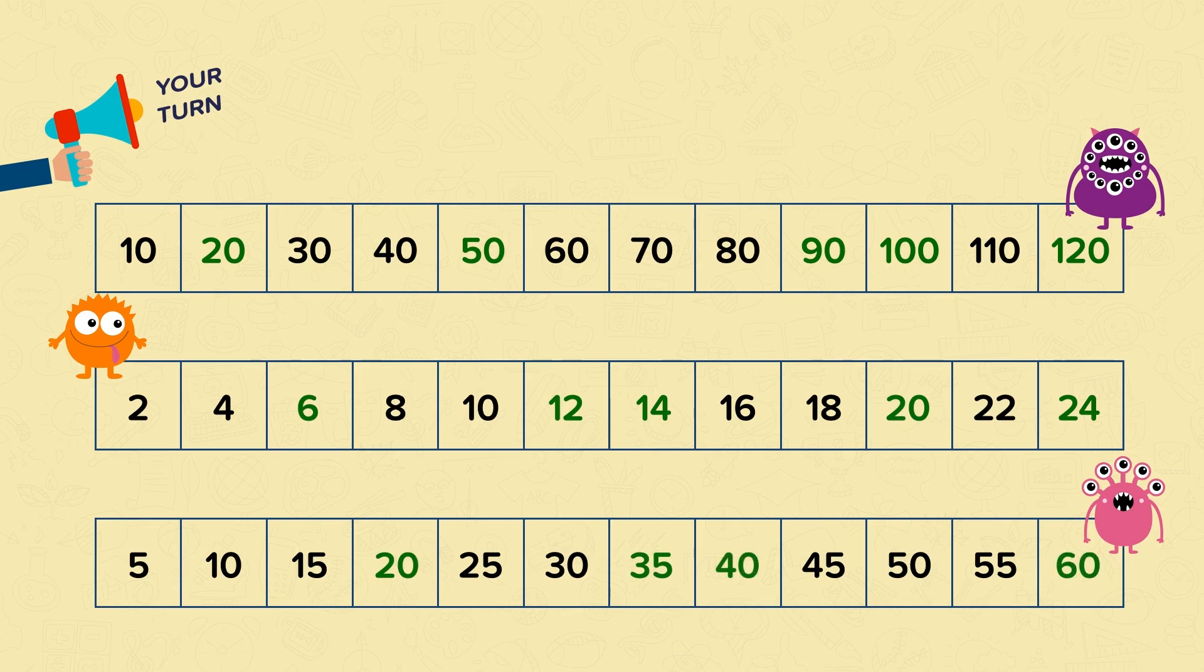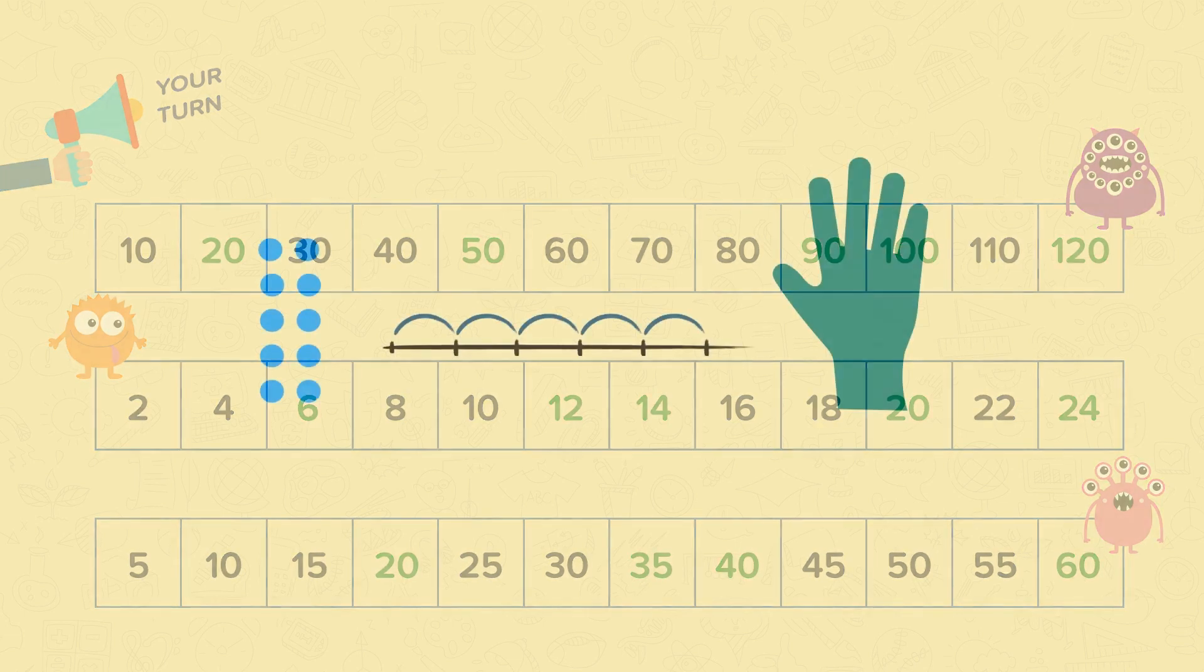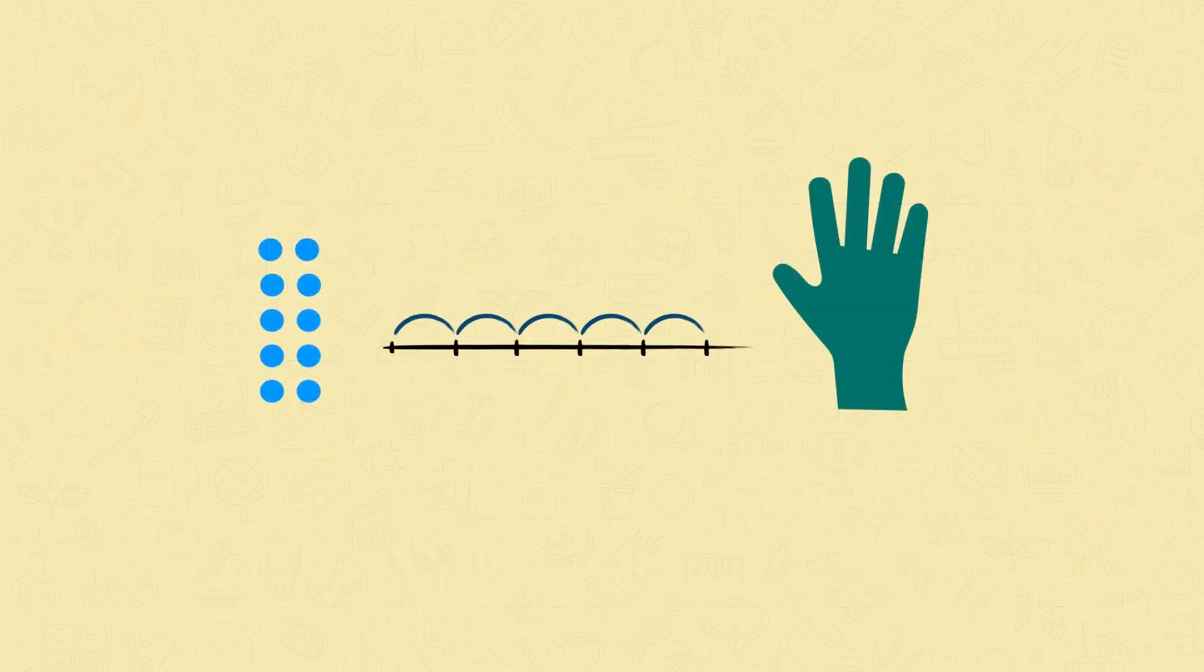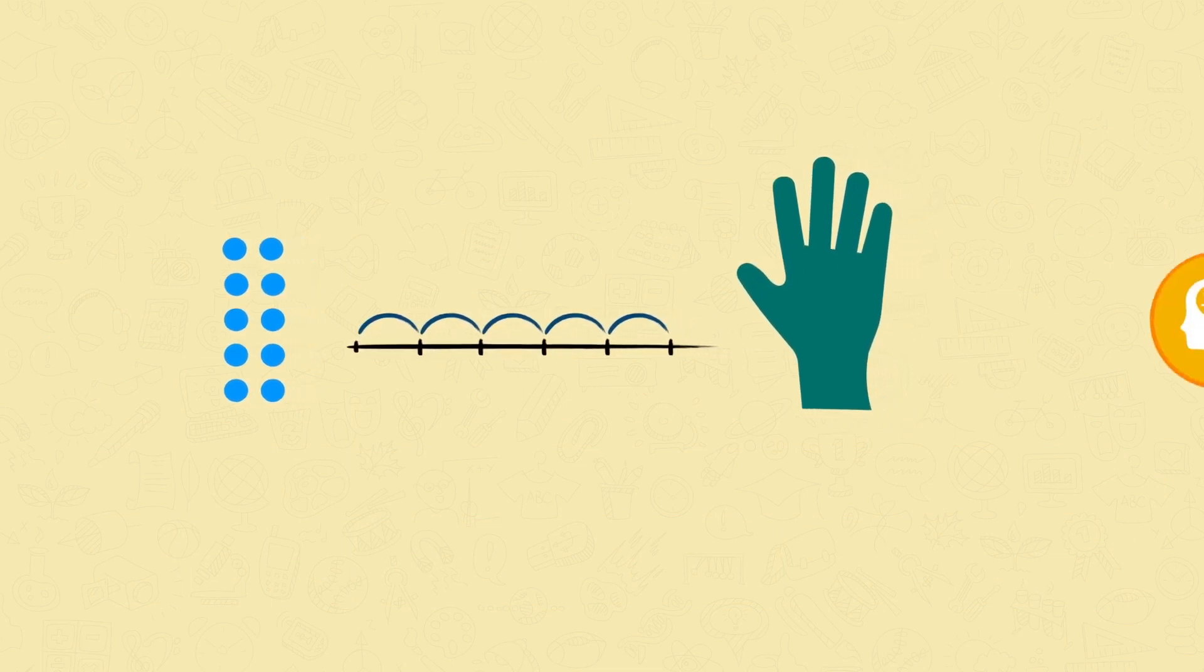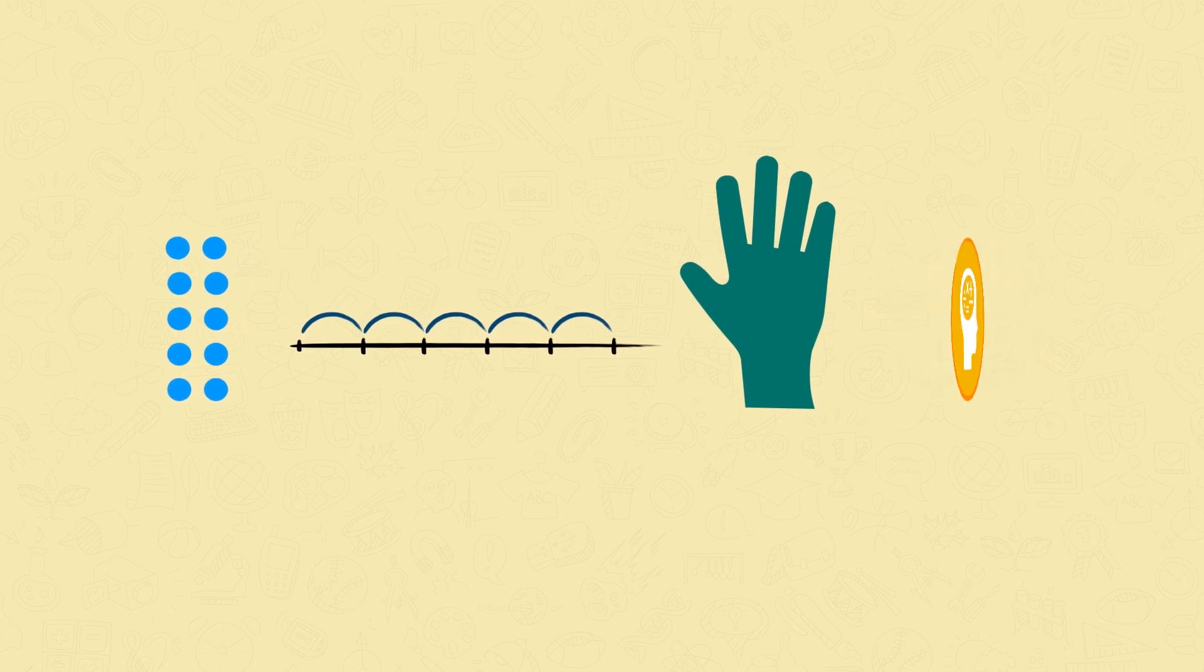If you can count confidently in 2s, 5s and 10s, you're ready to get multiplying. To help us multiply by 2, 5 and 10, we'll look at how we can use arrays, number lines and your fingers to help you. As you become more confident you should aim to multiply in your head.